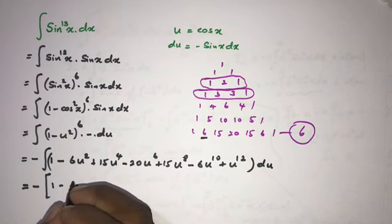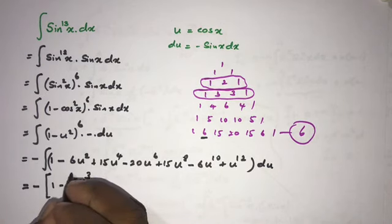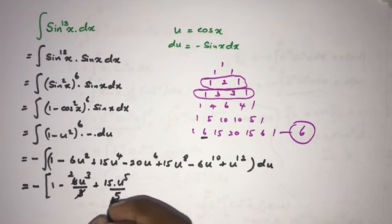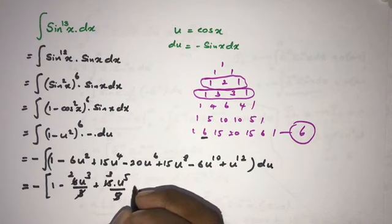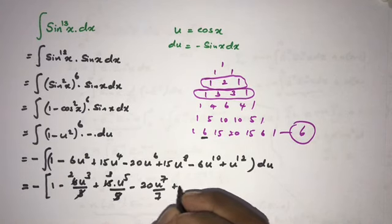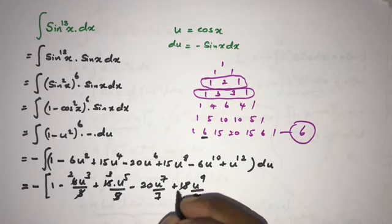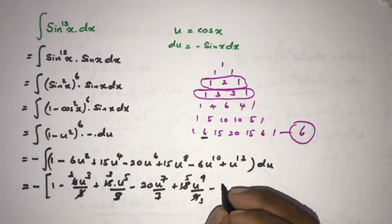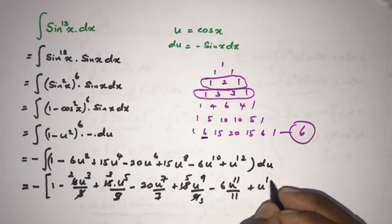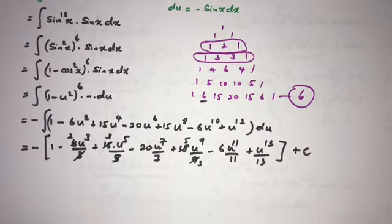Applying the power rule to each term, we get minus the quantity: u minus 6 times u cubed over 3 plus 15 times u to the fifth over 5 minus 20 times u to the seventh over 7 plus 15 times u to the ninth over 9 minus 6 times u to the eleventh over 11 plus u to the thirteenth over 13, plus C. Simplifying: minus u plus 2u cubed minus 3u to the fifth plus 20u to the seventh over 7 minus 5u to the ninth over 3 plus 6u to the eleventh over 11 minus u to the thirteenth over 13, plus C.